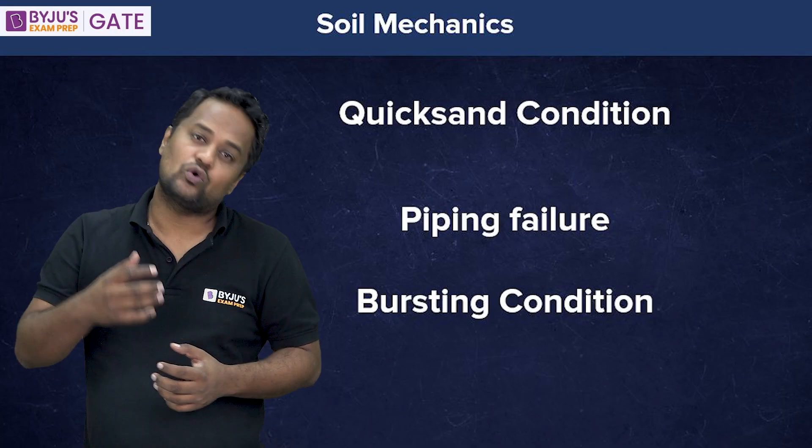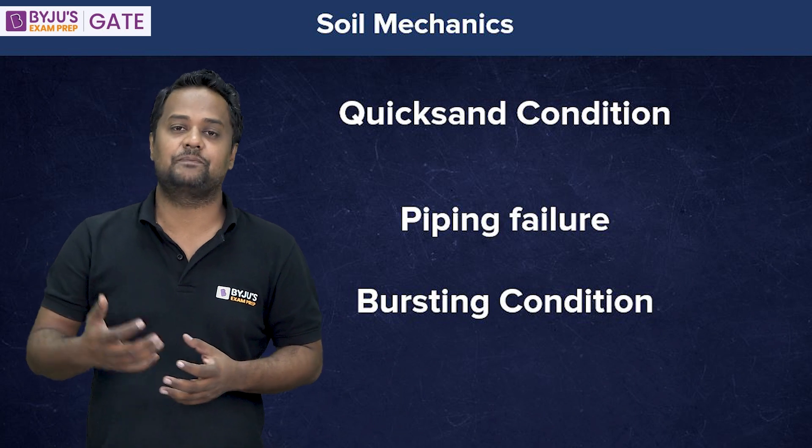And when somebody is pulling me upward with 10 newtons and my weight is 80 newtons, the contact force will be only 70. So the contact force will be zero when there is no contact between the particles. In quicksand condition, it is due to upward seepage of water — the effective stress becomes zero. That is called quicksand condition, or bursting condition, or piping failure.